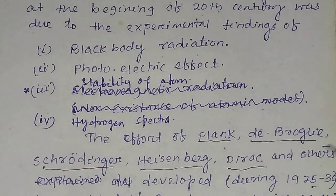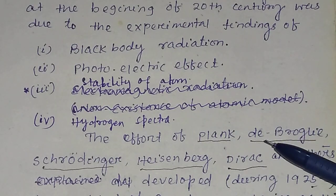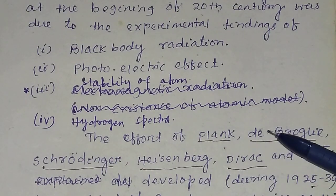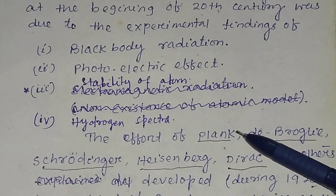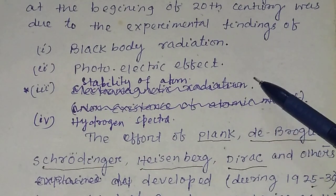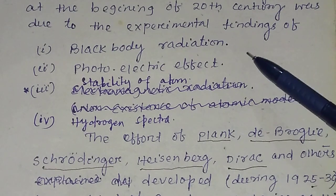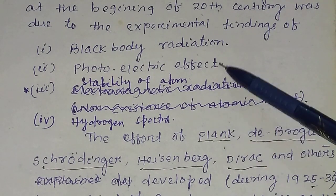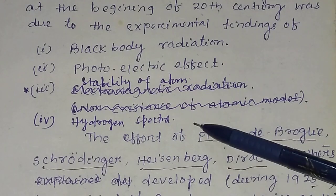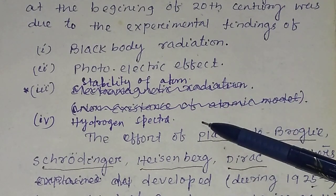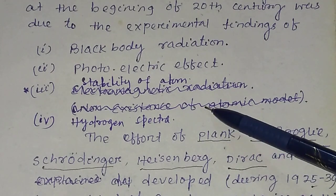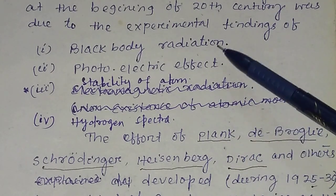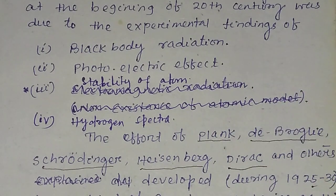So for the question about the failure or inadequacies of classical physics, you have to mention these four experimental findings — black body radiation, photoelectric effect, hydrogen spectra, and atomic stability — which could not be explained by classical physics. These are the inadequacies of classical physics.